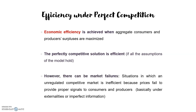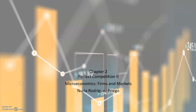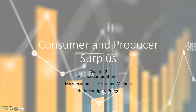However, there can be market failures — situations in which a regulated competitive market is inefficient because prices fail to provide proper signals to consumers and producers. This can happen under externalities or imperfect information, where some assumptions of the model do not hold. For example, without perfect information we cannot have a perfectly competitive equilibrium. That's all for now — see you in the next video.